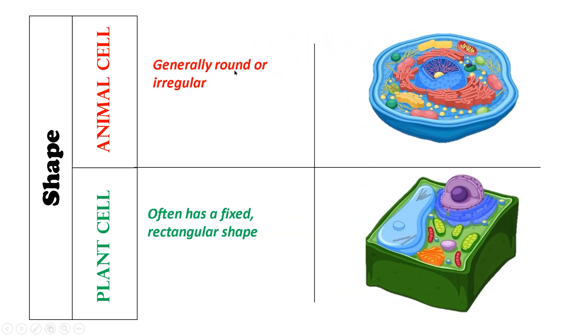Animal cells are generally round or irregular in shape, on the other hand plant cells often have a fixed rectangular shape.